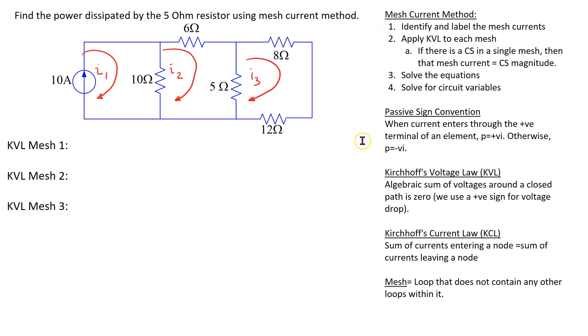Mesh current method requires application of Kirchoff voltage law, and in writing the KVL expressions, we use Ohm's law and passive sign convention. Recall that a mesh is a loop that does not contain any other loops within it.